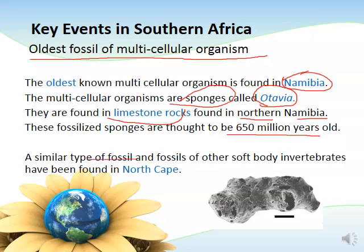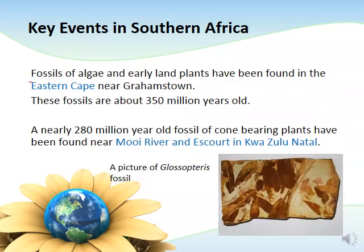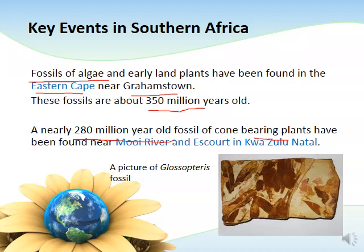Similar fossils of soft-bodied organisms, just like the sponges, can be found in the Northern Cape. Also in South Africa, fossils of algae and early land plants — such as mosses, the bryophytes — have been found in the Eastern Cape near Grahamstown, thought to be about 350 million years old. Fossils of cone-bearing plants, like cycads and pine trees, about 280 million years old, have been found near Mooi River in KwaZulu-Natal.